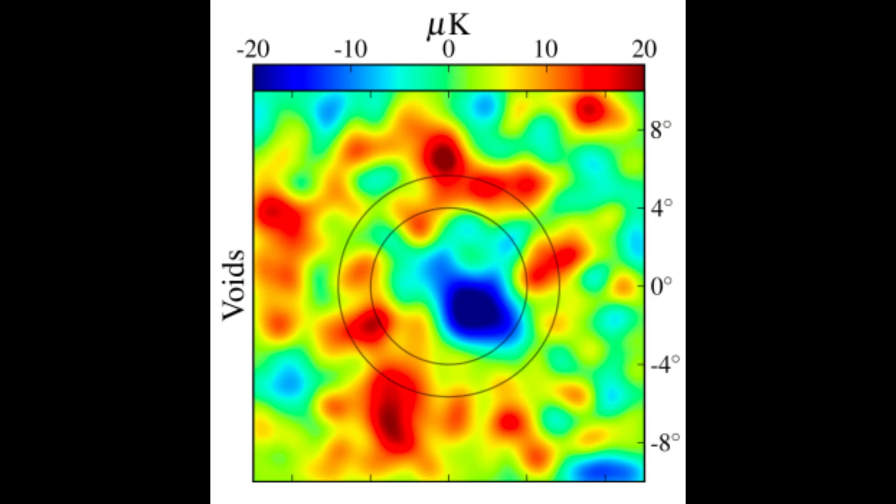Moreover, this cold spot is surrounded by a ring, on the contrary, with a temperature above the average. Such a huge size really makes the spot very strange.